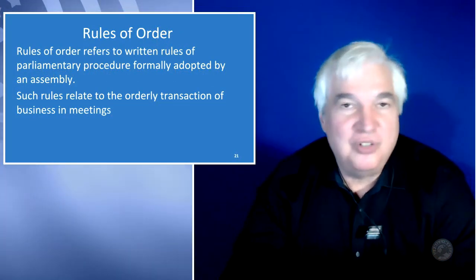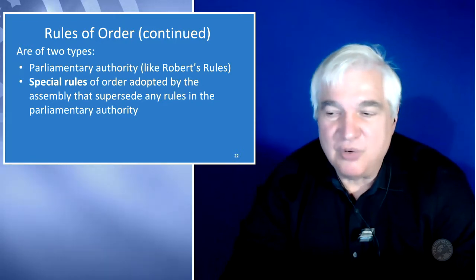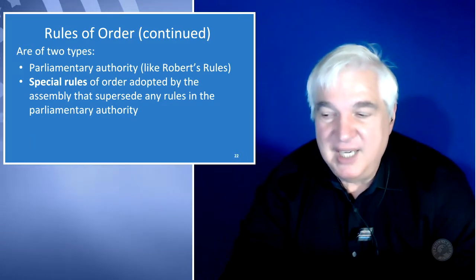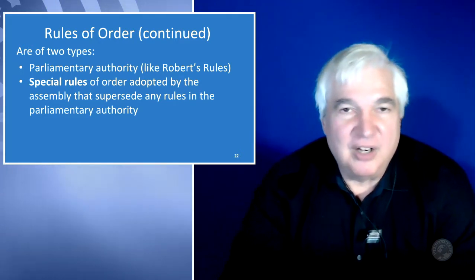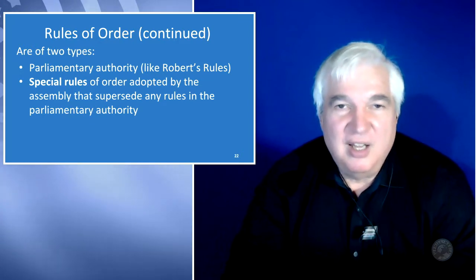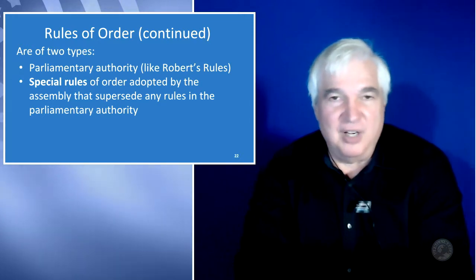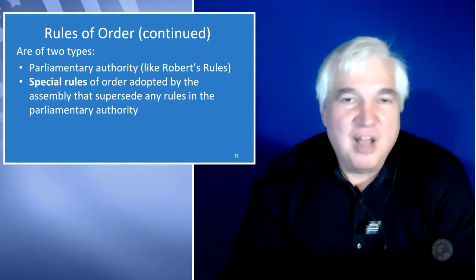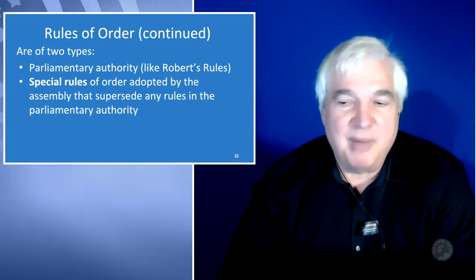There are actually two types of rules of order. There's a parliamentary authority like Robert's Rules, and then there are special rules of order adopted by the assembly that supersede any rules in the parliamentary authority. Going back to what I was saying earlier, there are circumstances where you might want to tweak the basics of parliamentary procedure without taking away anyone's rights, but changing how they're executed.